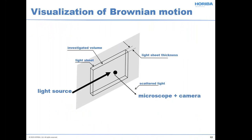In nanoparticle tracking analysis, a light source comes from the left side into the sample, and particles zip around due to thermal motion. Towards the bottom right, a microscope and camera look at the scattered light — it's really a dark field microscopy approach. The scattered light tells us where the particle is. You take a video, and then you know location versus time, and you can extract particle motion.